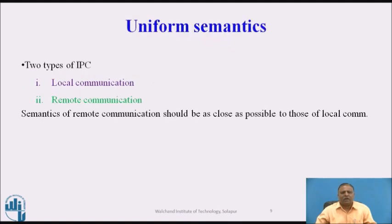Uniform semantics: there are two types of IPC — local communication, meaning communication between two processes on the same machine, and remote communication, meaning communication between two processes on different machines. The semantics of remote communication should be as close as possible to those of local communication, so the same system can be used for both local and remote communication.